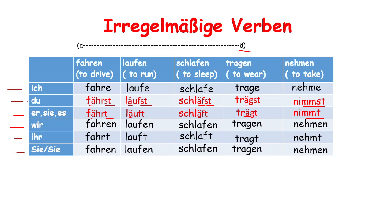In irregular verbs, we have a different changing pattern for du and er/sie/es. More than 90% of verbs are regular verbs, so we need to learn which verbs are irregular. You can find the verb list in the comment section.